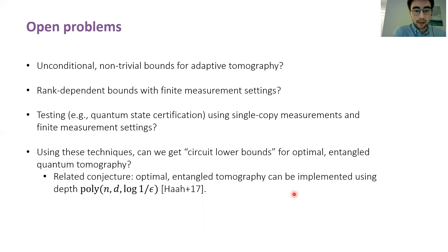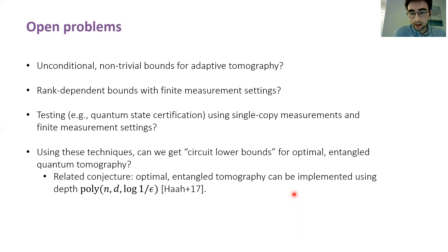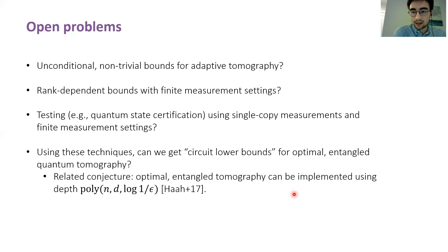Alternatively, one might ask whether you can get rank-dependent bounds using finite measurement settings. Another interesting direction is whether you can derive lower bounds on testing using single copy measurements under the assumption of finite measurement settings. Finally, I wonder whether we can use our techniques to get circuit lower bounds for optimal entangled quantum tomography — a question related to a conjecture in the paper by Ha and others, that optimal entangled tomography can be implemented using circuits whose depth grows polynomial in d. With that, I'll conclude my talk. Thank you very much for listening.